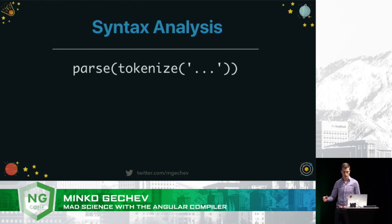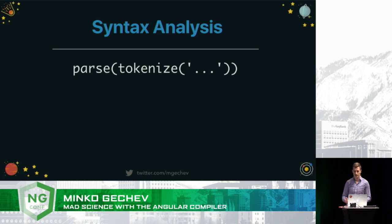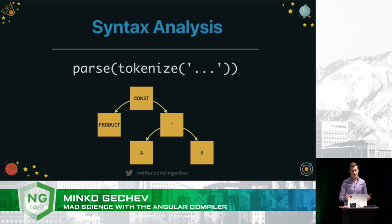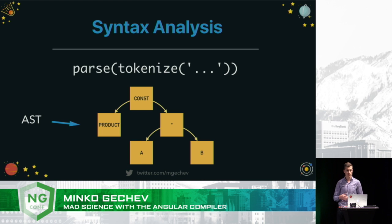We're going to take this output and pass it to the module for syntax analysis. Out of it and out of some grammar, the syntax analyzer is going to produce a tree. This is just the abstract representation of our program, which is called an AST, or an abstract syntax tree.